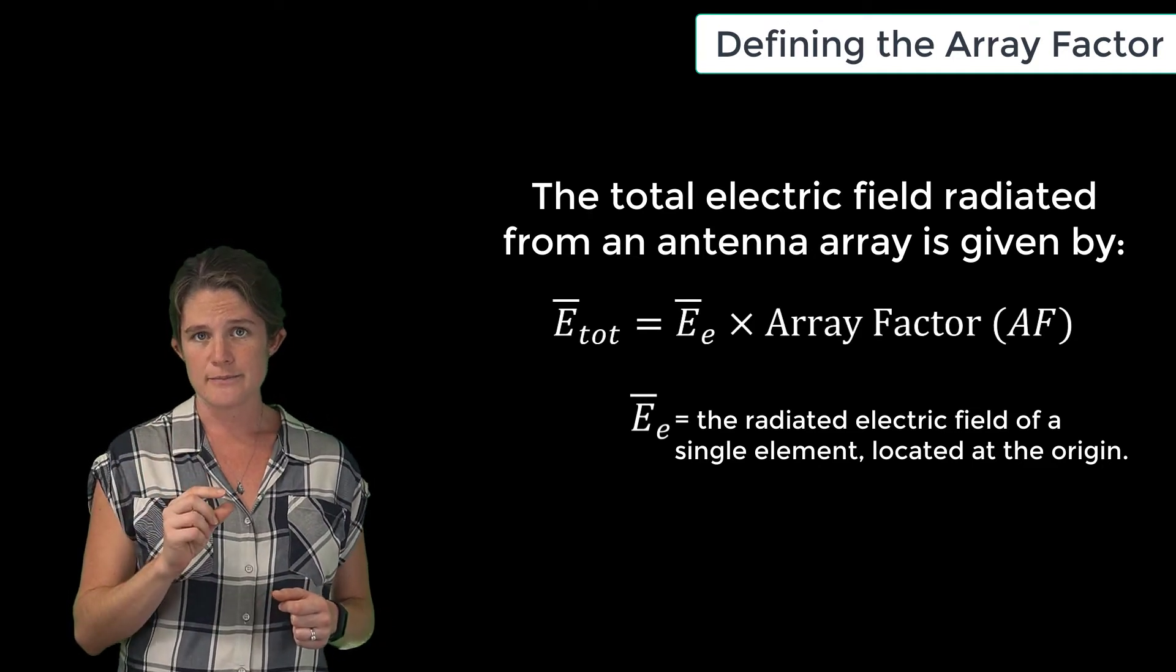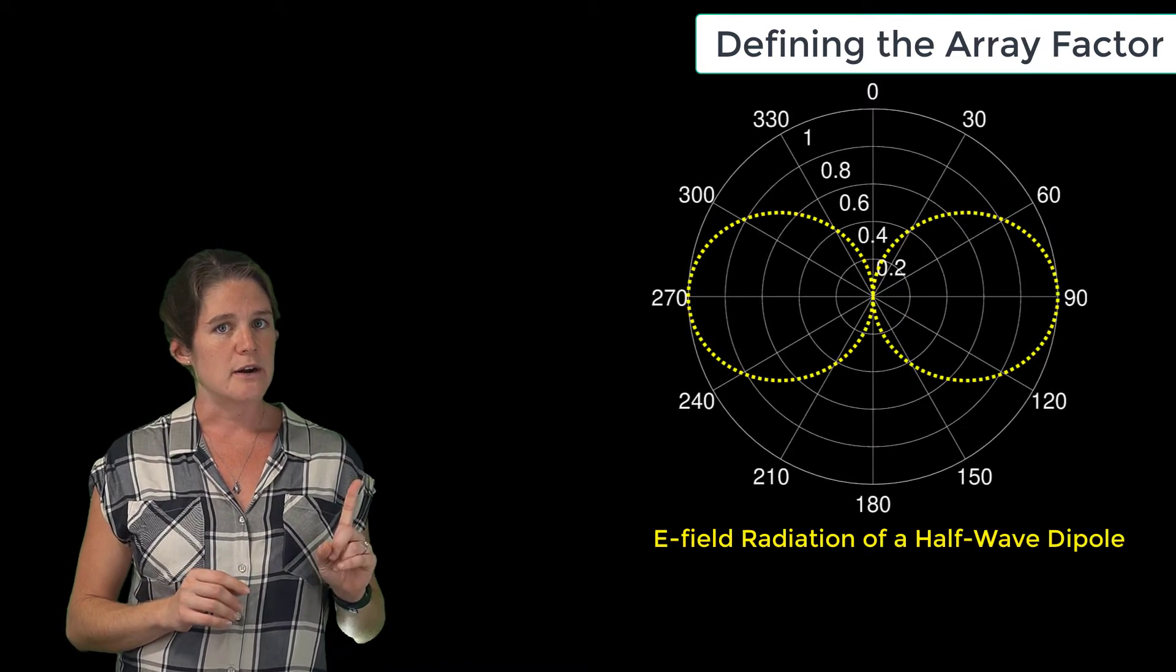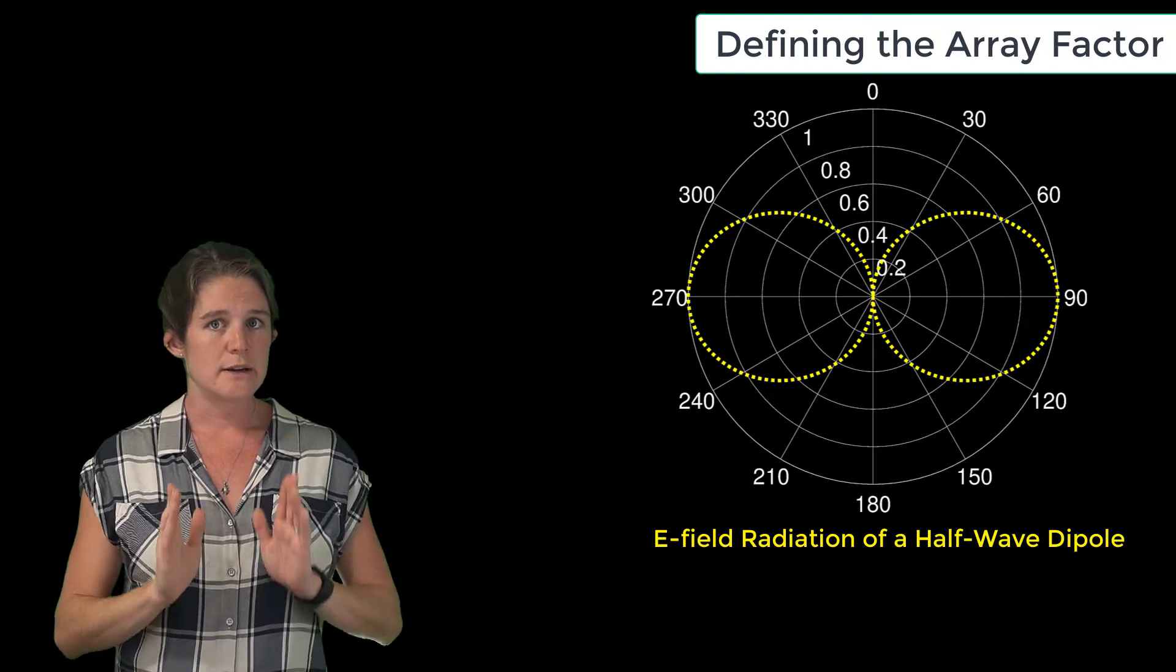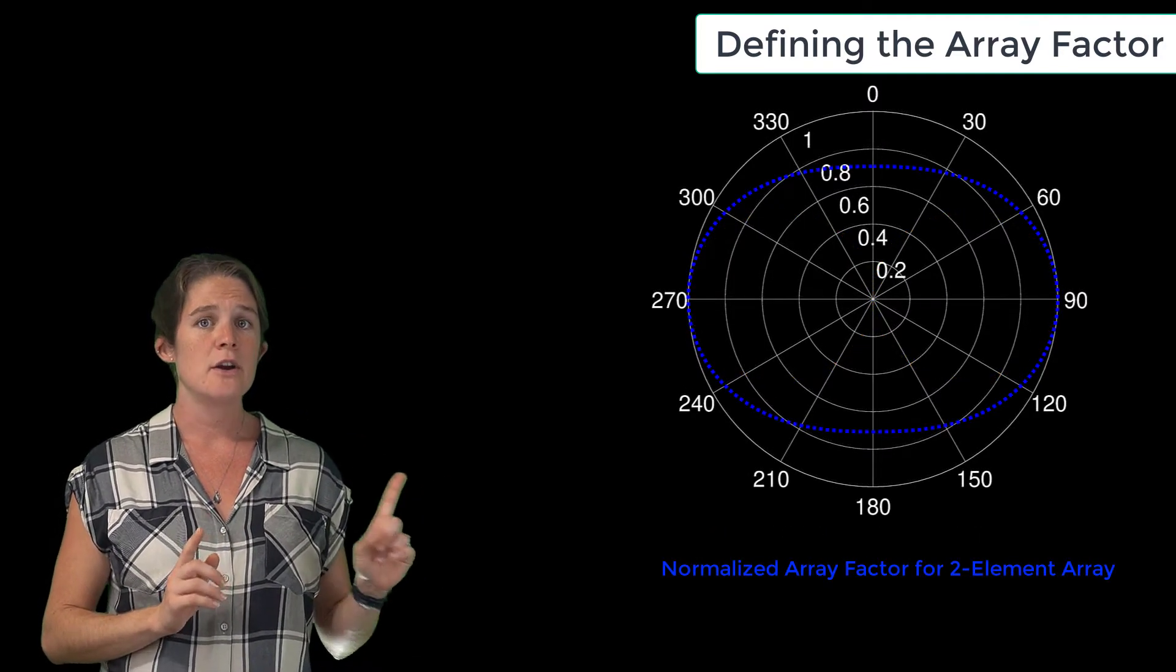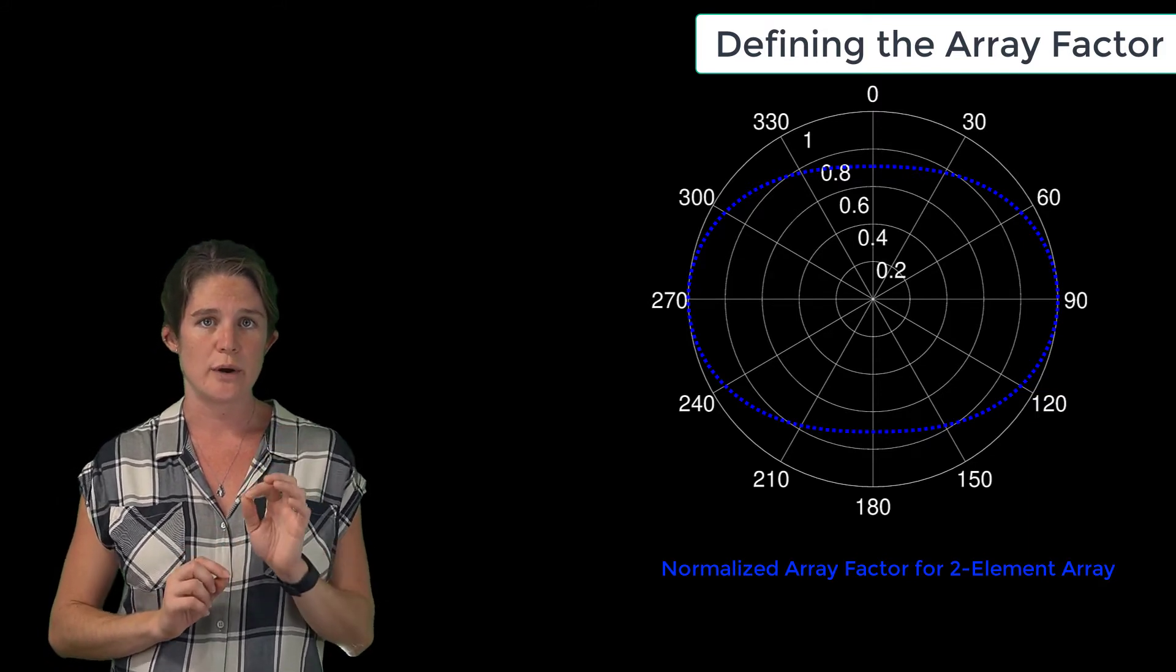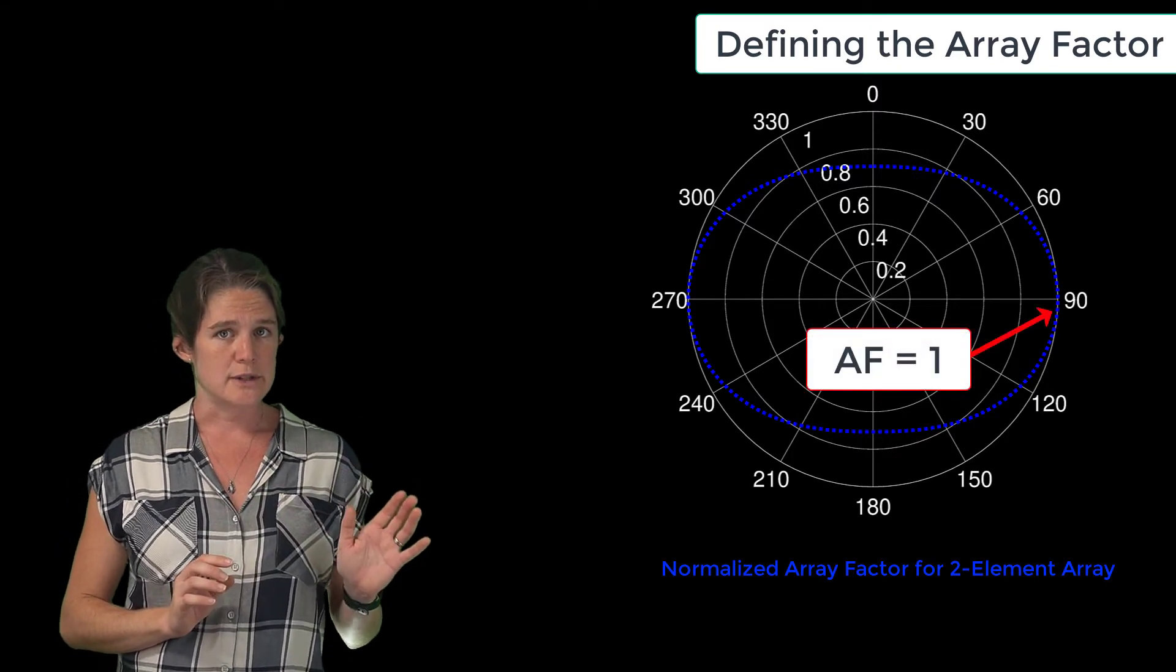In other words, the array factor scales the natural radiation pattern of a single antenna element. So for instance, here's the normalized electric field pattern of a single dipole antenna located at the origin and oriented along the z-axis. And here's the normalized array pattern for an array of two elements with a vertical separation of a quarter wavelength.